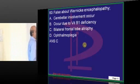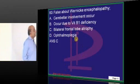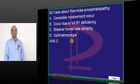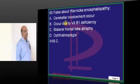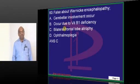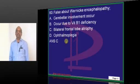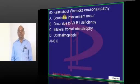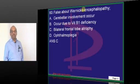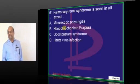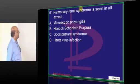In Wernicke's encephalopathy, you have ophthalmoplegia, thiamine deficiency, cerebellar involvement, and mammillary body necrosis — these are all true statements.